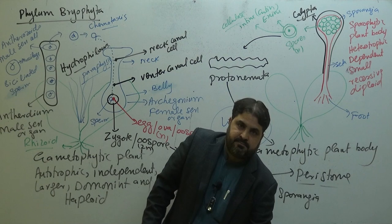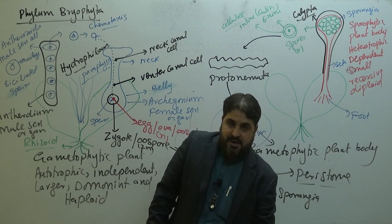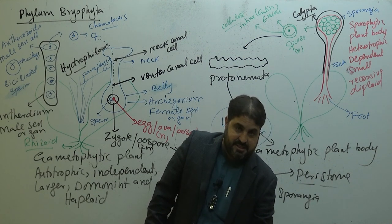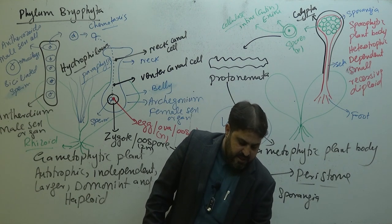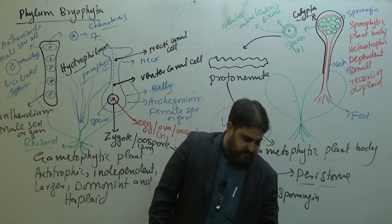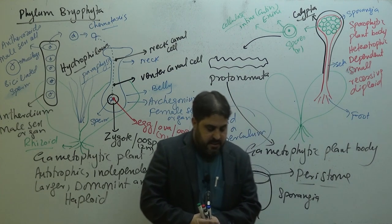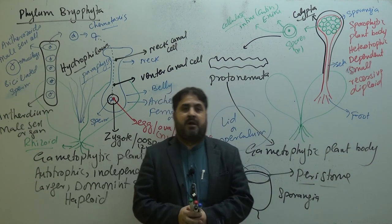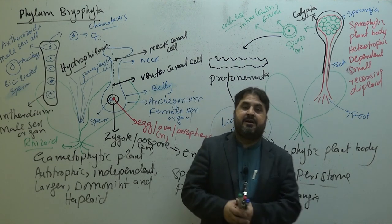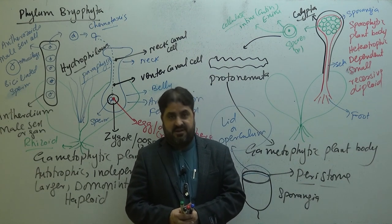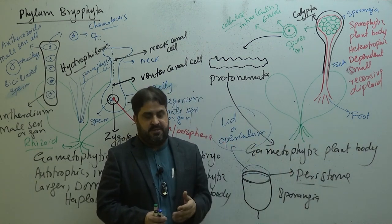Bryophytes are among the smallest plants — around 2.7 inches in height. There are some economic importances of bryophytes as well, such as peat moss, which increases the fertility of soils, and Sphagnum, which is used for horticulture purposes.